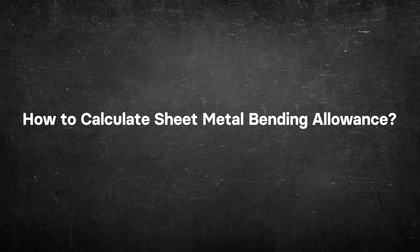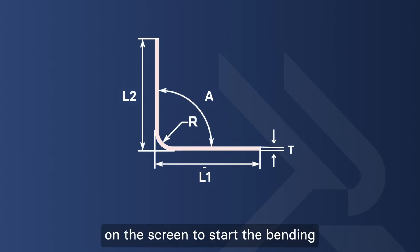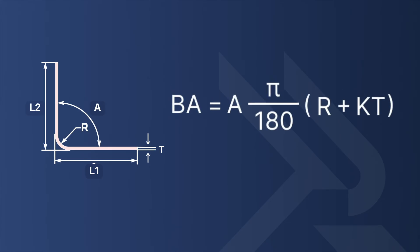How to calculate sheet metal bending allowance. You can use the formulae on the screen to start the bending allowance calculation. Bend allowance is equal to the angle times the sum of the bend radius and the K factor multiplied by the thickness.